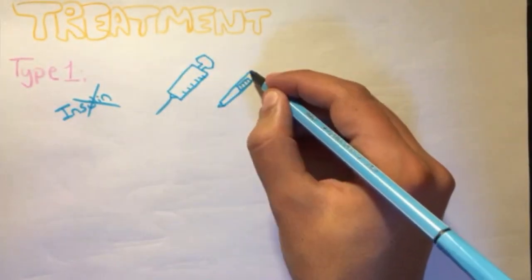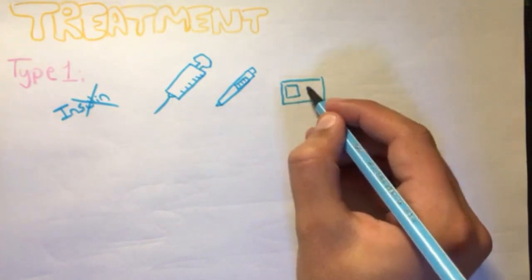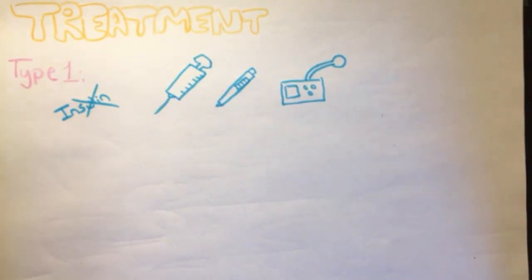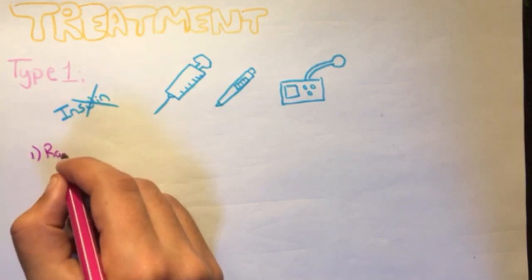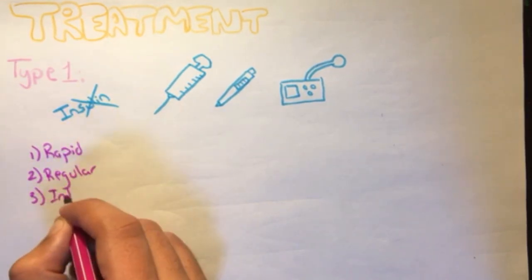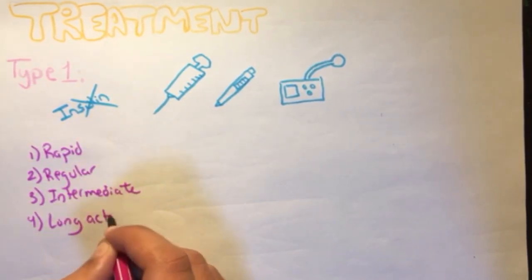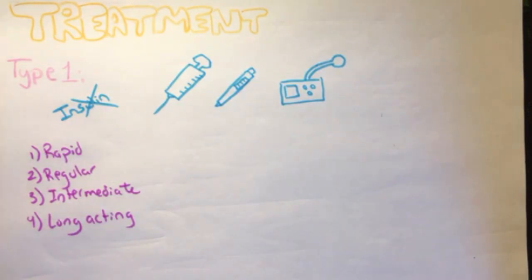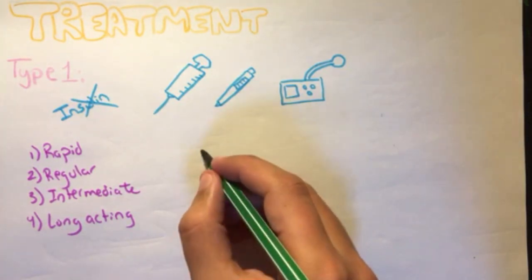These are given as an insulin pen, syringe or pump, which senses the body glucose levels and accordingly pumps insulin at the needed time. These insulin shots are of four types, according to the onset of action. They are either rapid, regular, intermediate or long-acting.